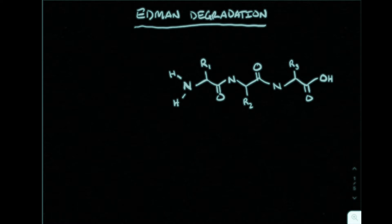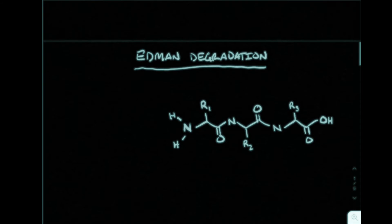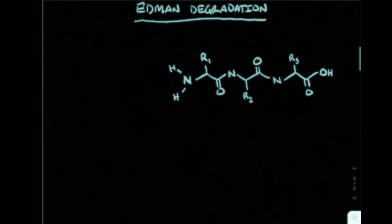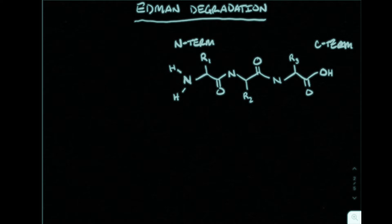We're going to go over the reaction for Edman degradation now. Any reaction begins with the important molecules of that reaction. In this case, we're going to use a simple polypeptide — a tripeptide — in which we have three different amino acid residues, labeled R1, R2, and R3. We'll label the N-terminus as well as the C-terminus. This is important because the function of Edman degradation occurs at the N-terminal amino acid, so we need to be aware of which end of the chain we're attacking.